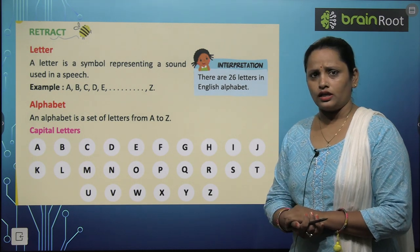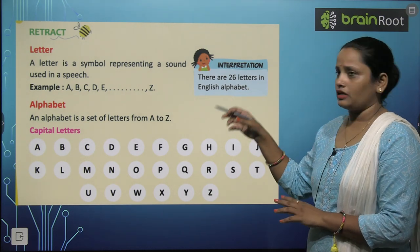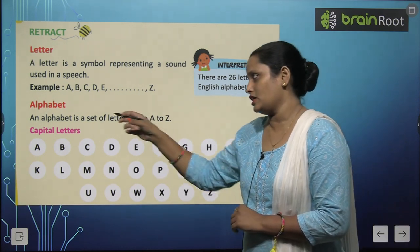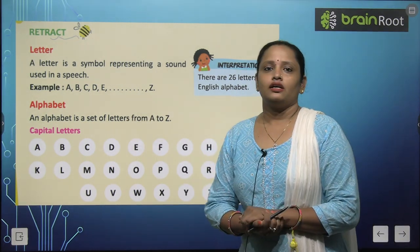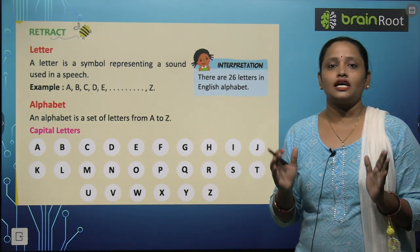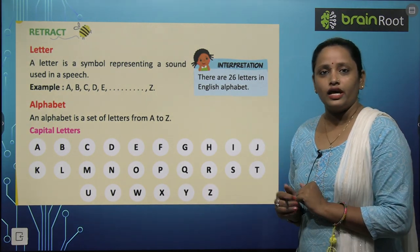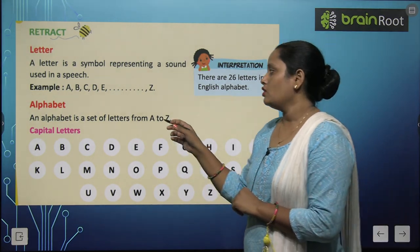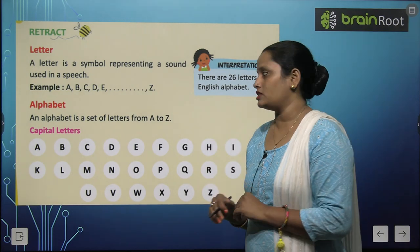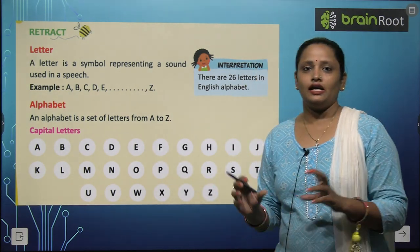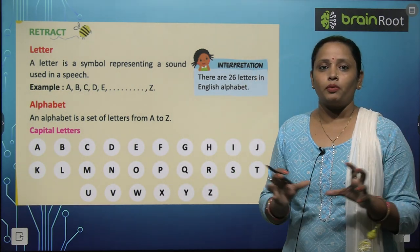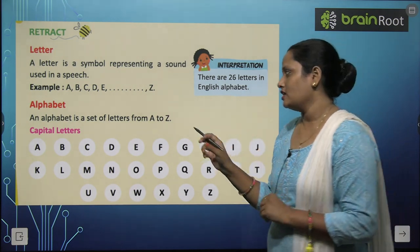Now what is an alphabet? An alphabet is a set of letters from A to Z. Alphabet kia hai? Letters ka group hai, ek set hai.